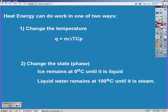So heat energy can be used to do work in one of two ways. It can either be used to change the temperature, in which case we're going to use q = mΔTCp, or to change the state or phase. Ice is going to remain at zero degrees Celsius until it's fully liquid, and liquid water remains at 100 until it's fully steam. So all the energy is being used in a phase change to pull the molecules apart, to separate them and break the intermolecular forces holding them together.